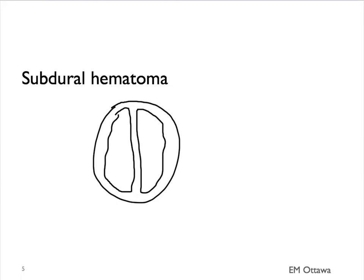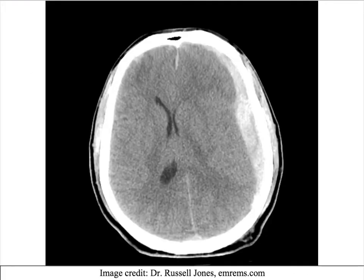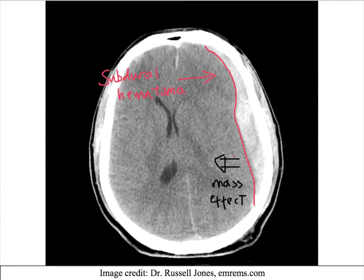Next, subdural hematoma. Since the blood is now underneath the dura, it has more of a crescent shape. On a non-contrast CT head, it would look like this. This is the subdural hematoma. When you look at the lateral ventricles, you would also notice that there is mass effect from this hematoma, causing a shift in the midline.